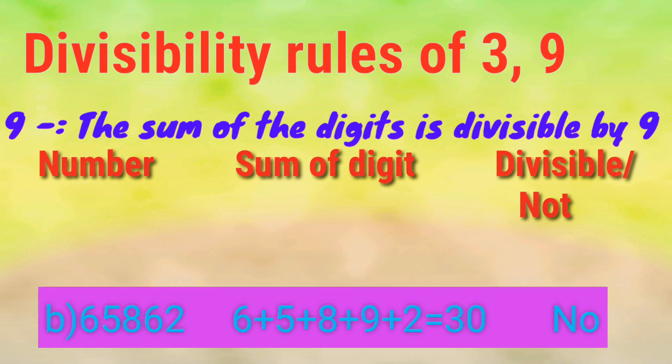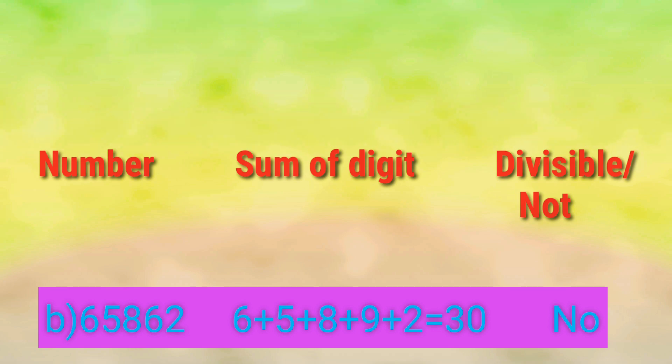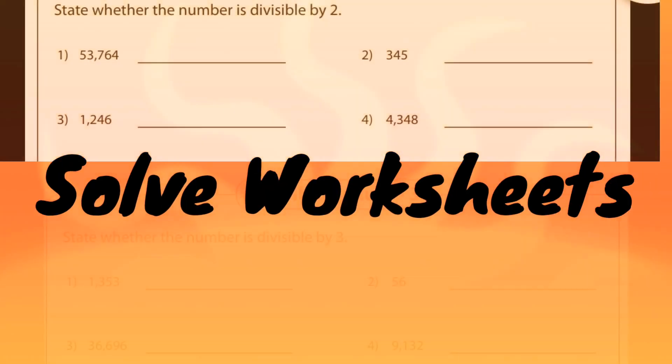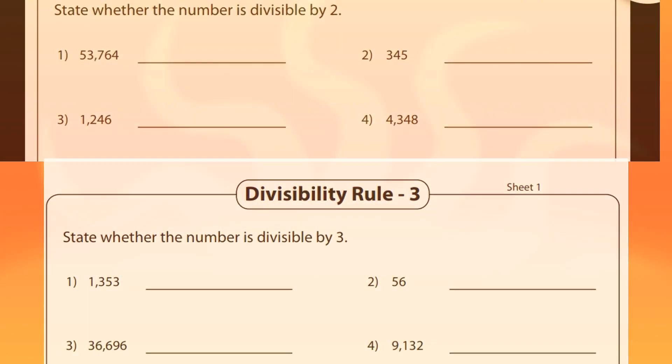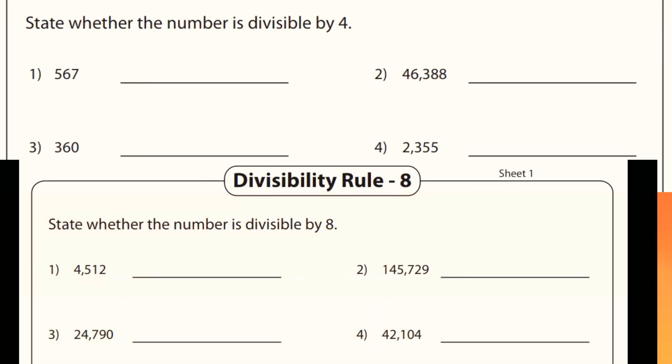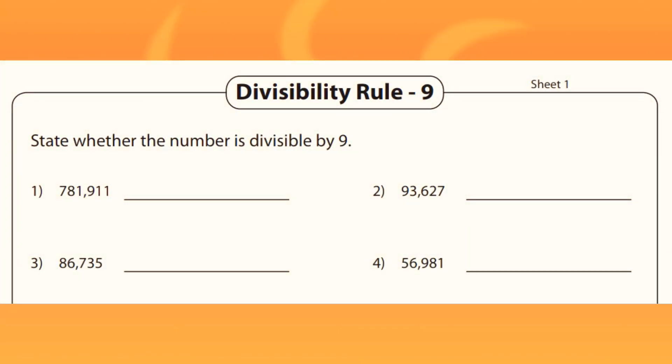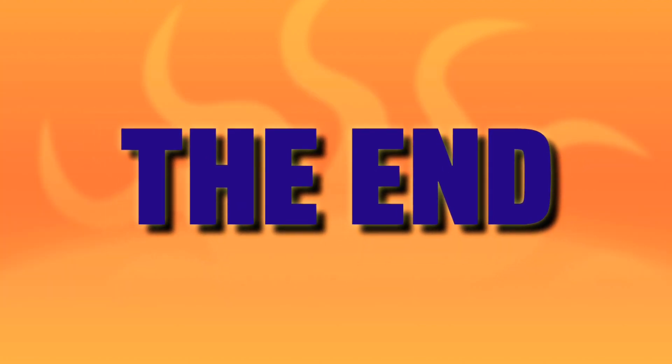Another example is 65,862. The sum of all digits is 6+5=11, 11+8=19, 19+6=25, 25+2=30. Wait — 6+5=11, +8=19, +9=28, +2=30. 30 does not come in the table of 9, so the whole number is not divisible by 9. So friends, we have learned about two parts: Part 1 covers divisibility tests of 2, 4, and 8, and Part 2 covers 3 and 9. In another video we will discuss Part 3 and Part 4. Thank you for watching. Have a good day.